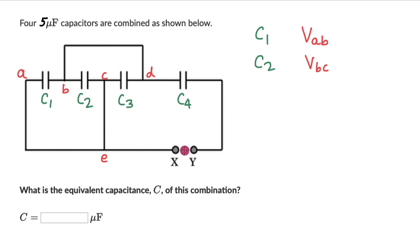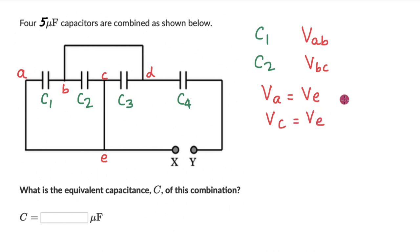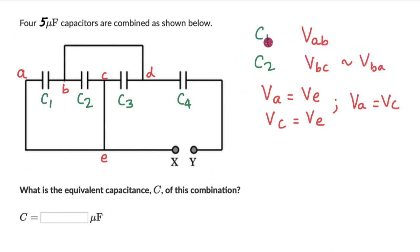Now if we look closely at the terminals XY, the potential at E will be the same as the potential at A because there is no circuit element in between, so there is no potential drop between A and E. Similarly, potential at E should be the same as potential at C. Which means VA equals VE and VC also equals VE, so VA is really equal to VC. Therefore VAB is really equal to VBC, meaning C1 and C2 have the same potential difference and are connected in parallel.